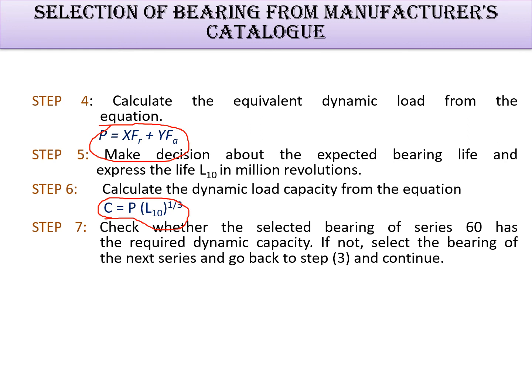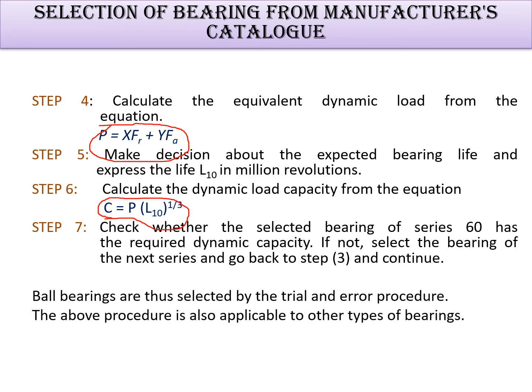For example, if you have selected a bearing from the 60 series — a deep groove ball bearing — you calculate the required dynamic load C and then check this value against the catalog table by trial and error. If the dynamic load required is, say, 15,000 N, you select a bearing from the table that meets this value. The shaft diameter is also referenced in the table. Based on these parameters, you determine whether to select a light series, medium series, or heavy series bearing.